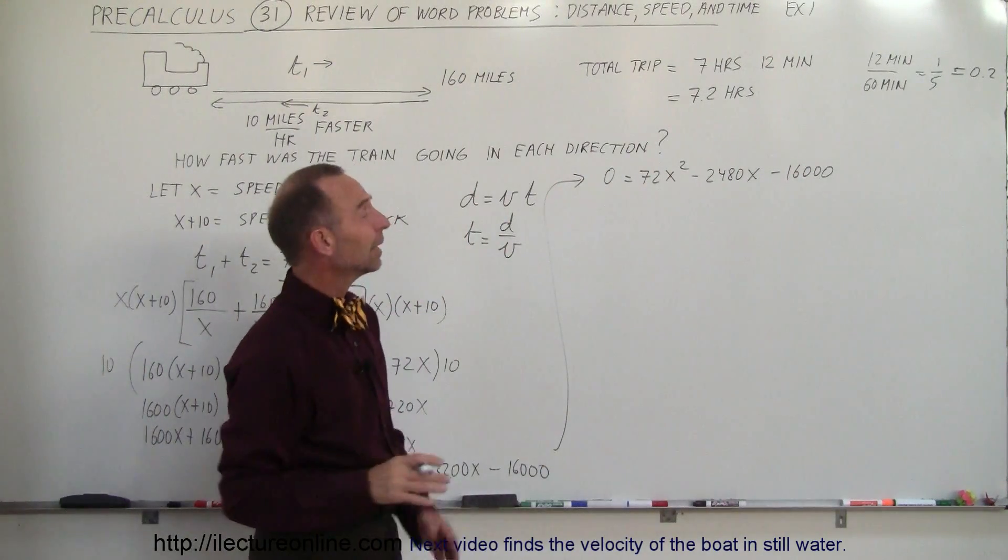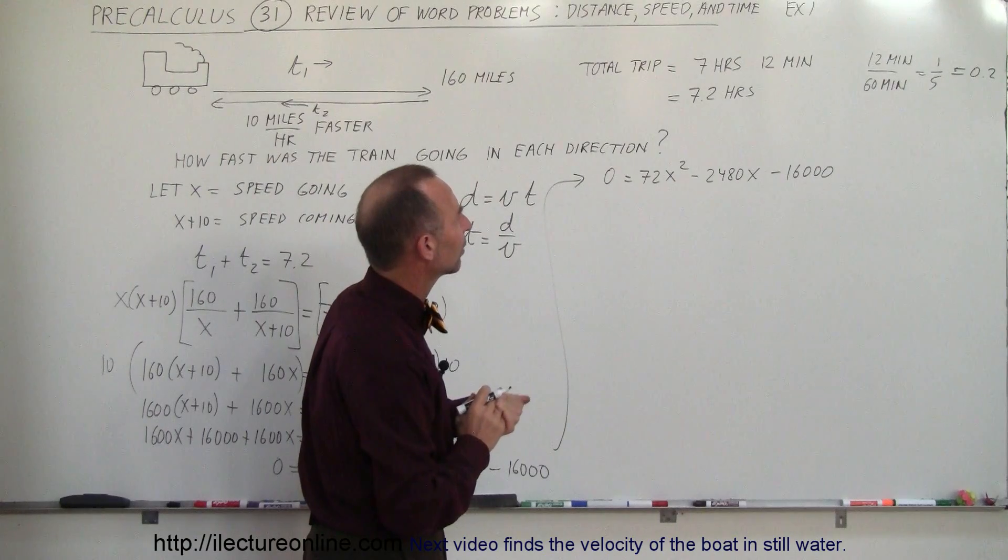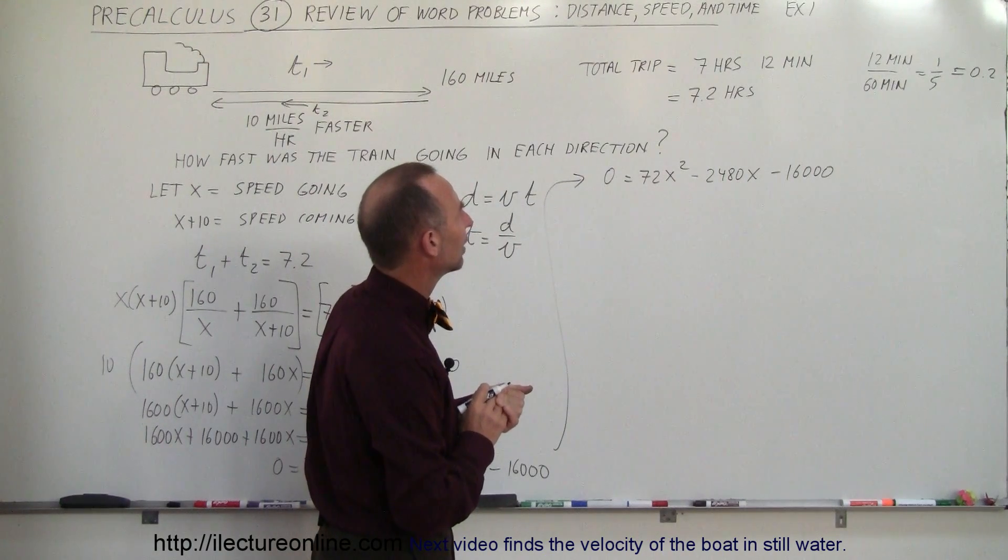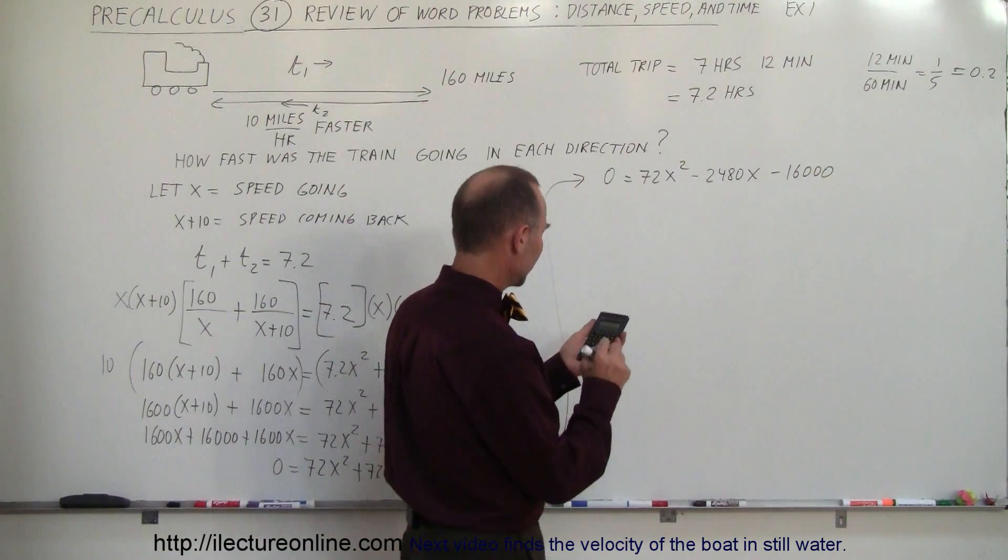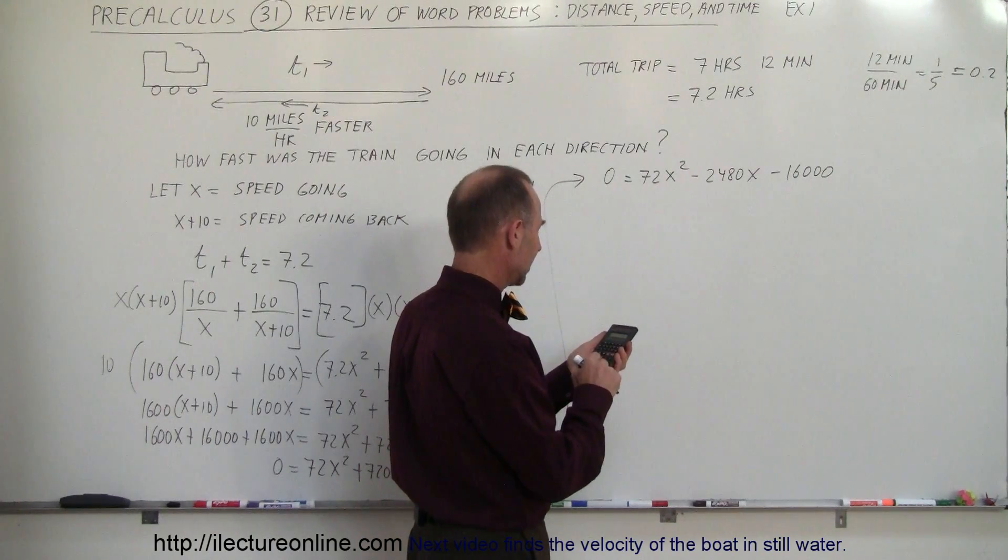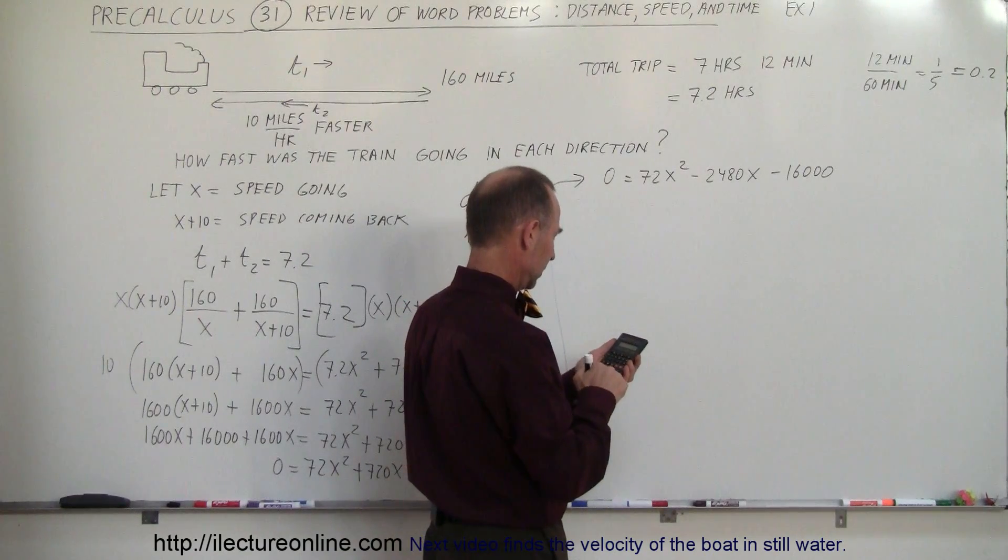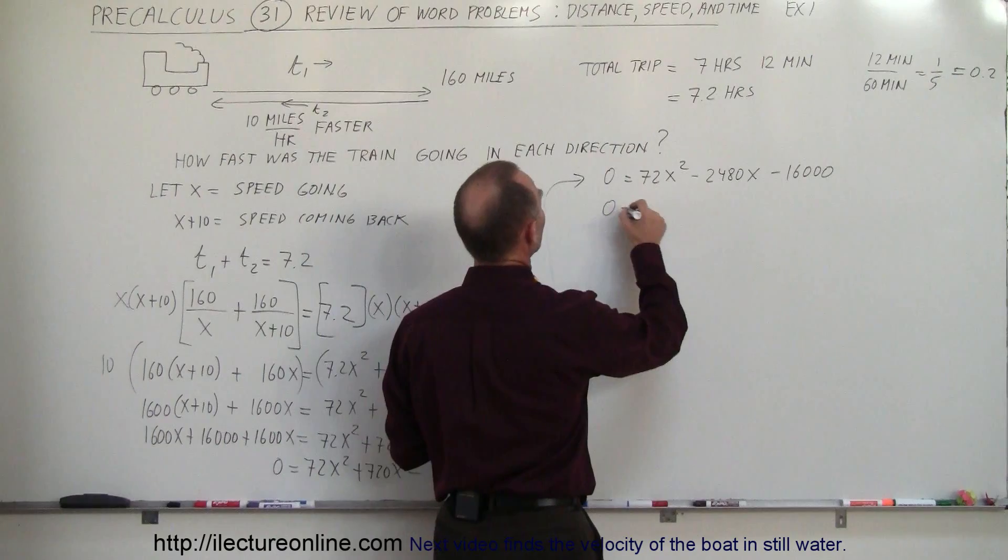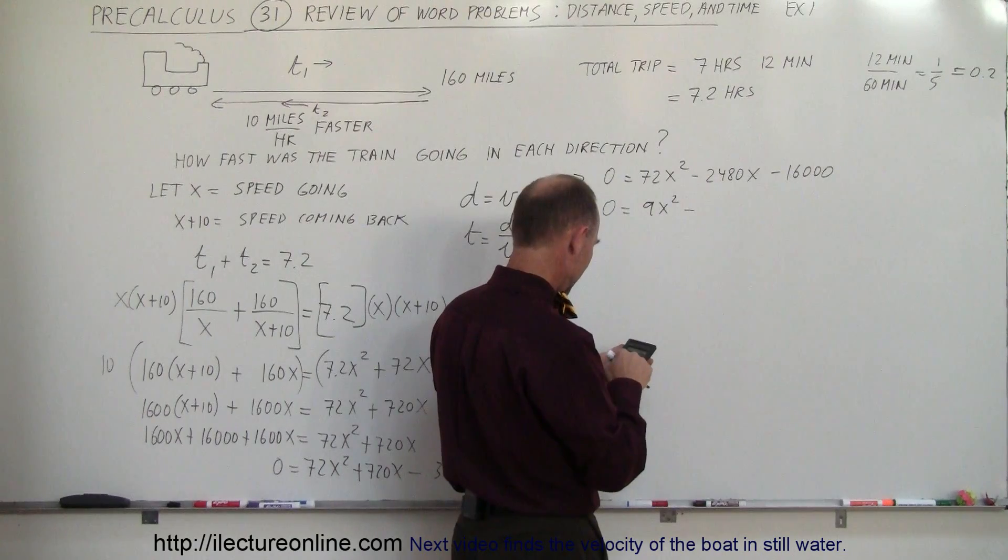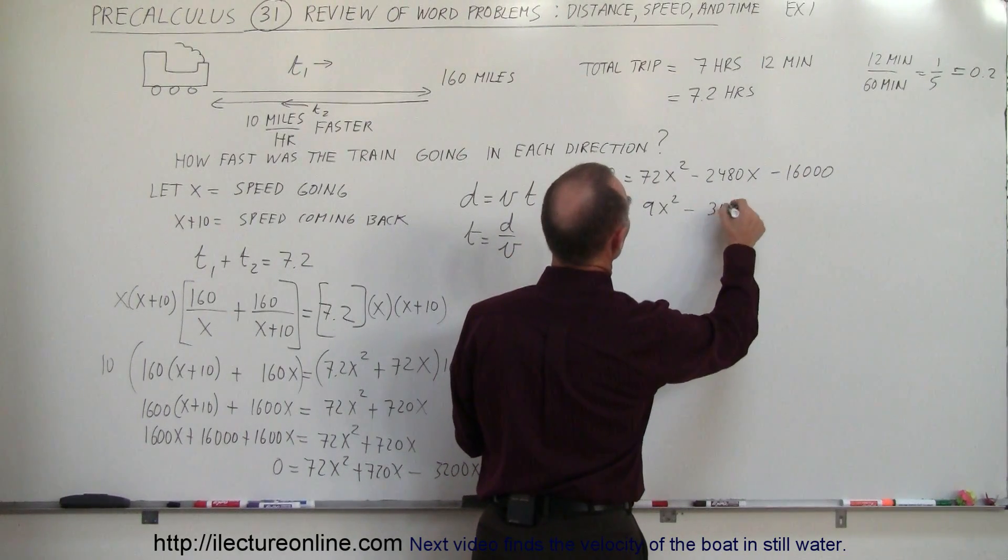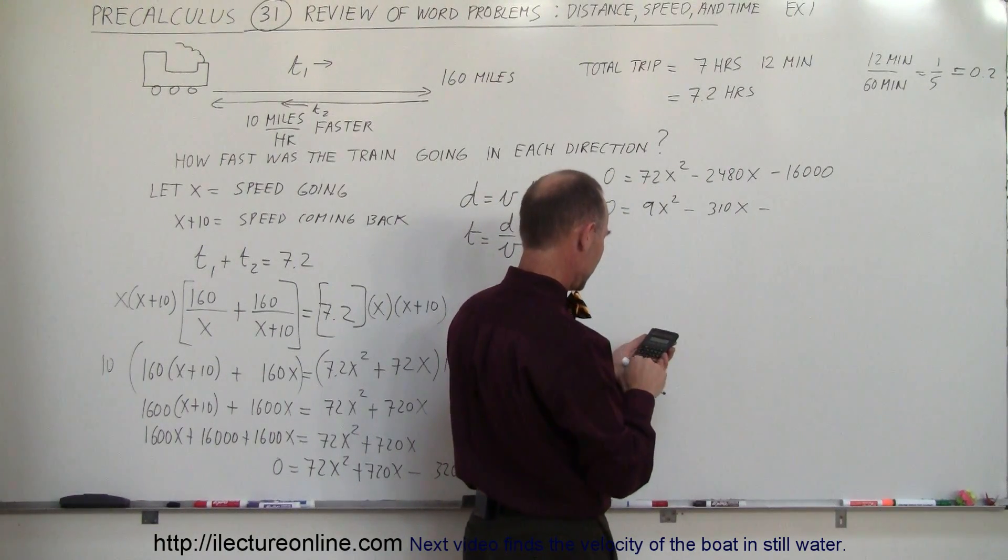We can probably simplify it a little bit because there's at least divisible by 2, divisible by 4, divisible by 8. At the very least, maybe by 16. Let's try a few things to simplify this. Let's see if we can divide 72 by 16. That's 4.5. How about by 8? 72 divided by 8. Yeah, it does. There we go. 0 equals 9x squared minus 2480 divided by 8 gives us 310x minus 16,000 divided by 8. That would be 2,000.